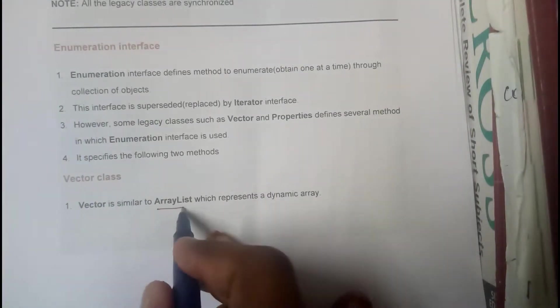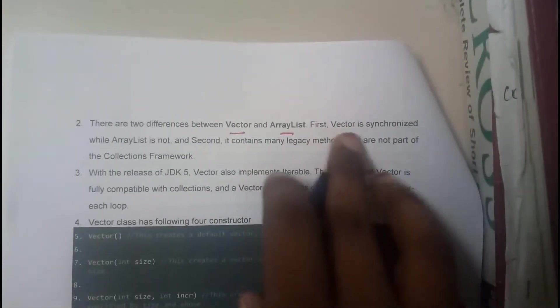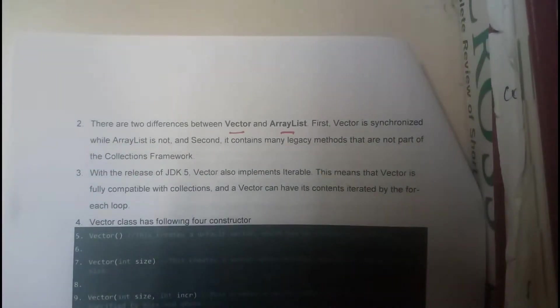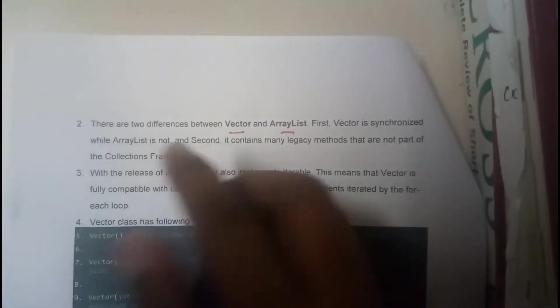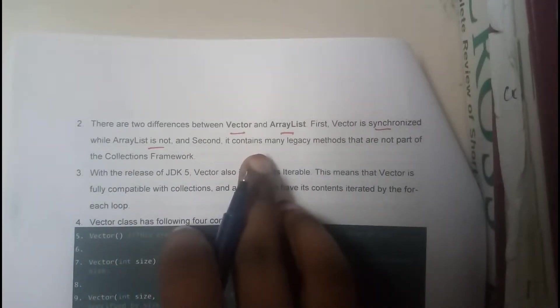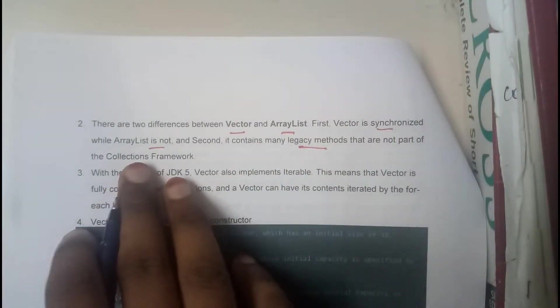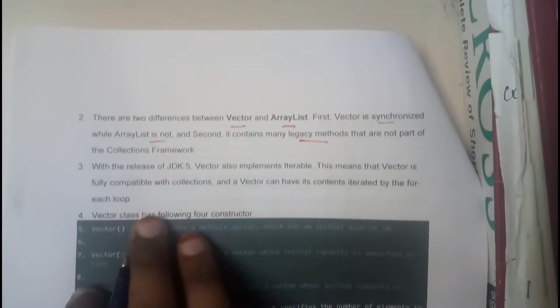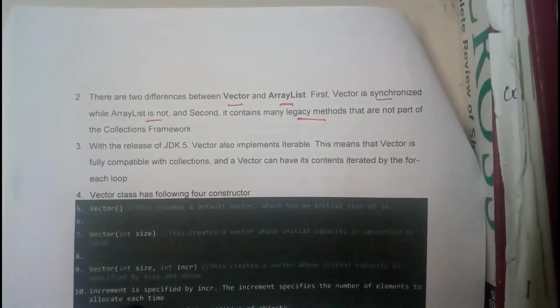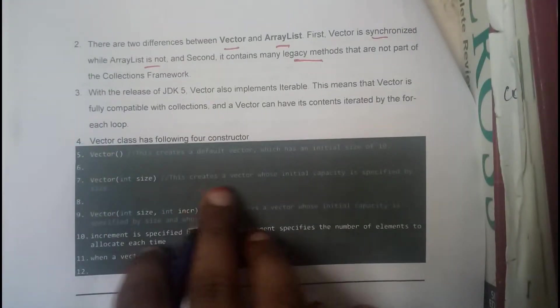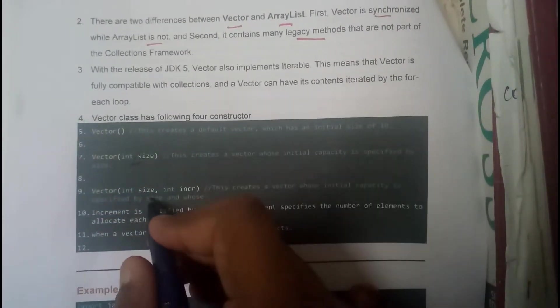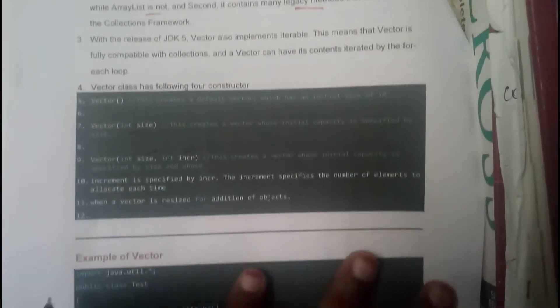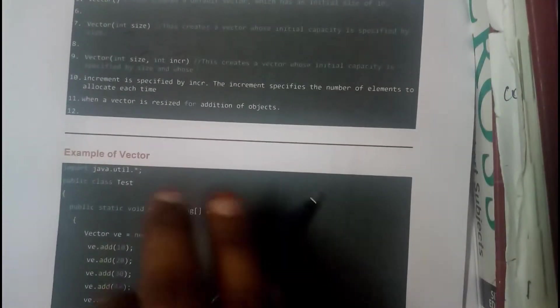Vector is similar to array list, which is a dynamic array that is synchronized. There are two differences between vector and array list: first, vector is synchronized while array list is not synchronized. Second, it contains many legacy methods where the collection frameworks do not contain many. This is the creation initialization, creation with the size, and creation with the increment capacity. Now let us go through a small example.